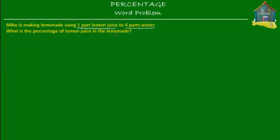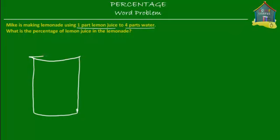What's given to us is that Mike is making lemonade using lemon juice and water. Let's make a picture of the jar in which he is making lemonade. He is using one part of lemon juice, which means he fills up the jar with this much lemon juice, and then he adds four parts of water.